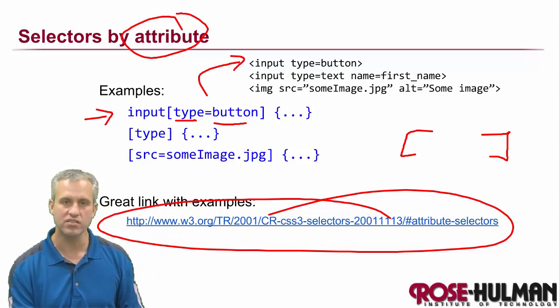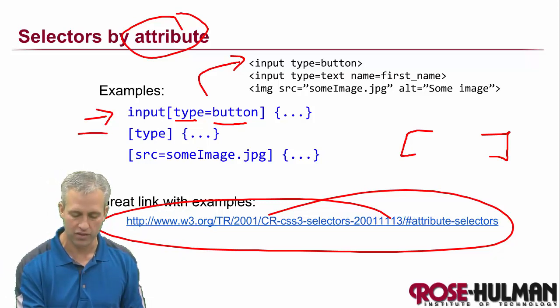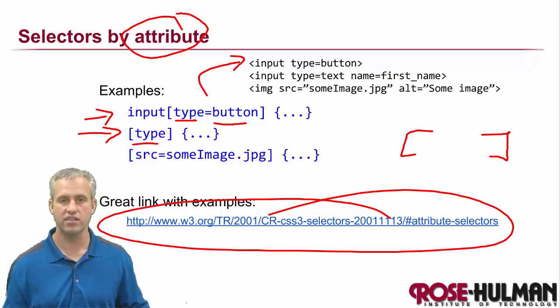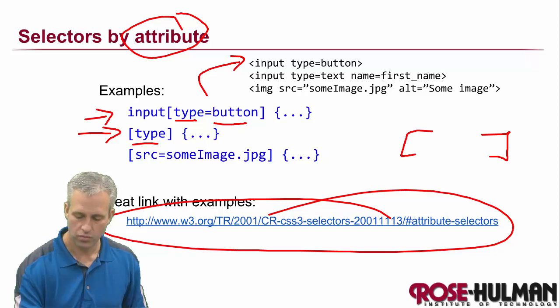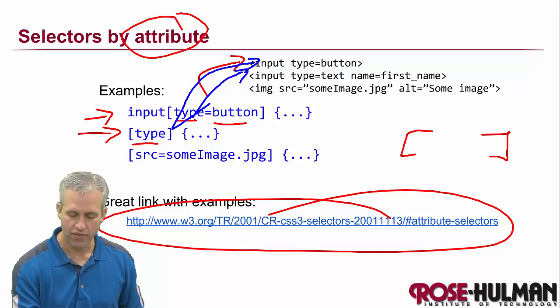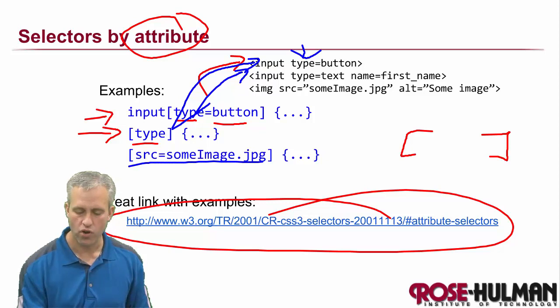You do see them like this a lot, but you don't have to have them like this. In fact, this one is totally valid. So this is an attribute rule where we're just looking for anybody that has a type attribute. So this one would actually match both the first one and the second one because they both have a type attribute. And people use them for all kinds of things.